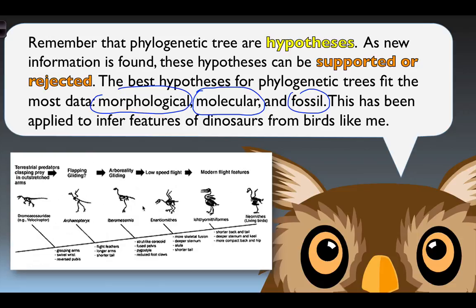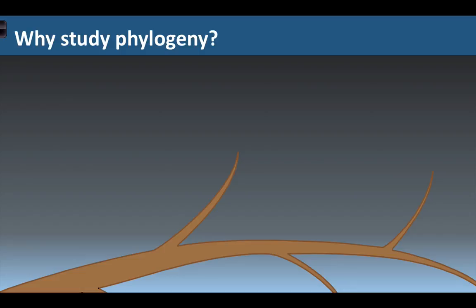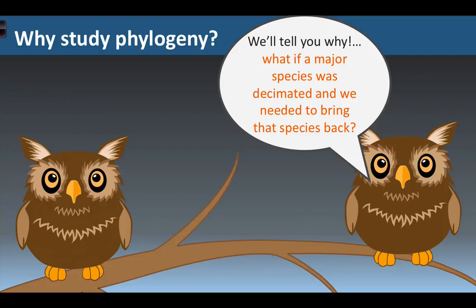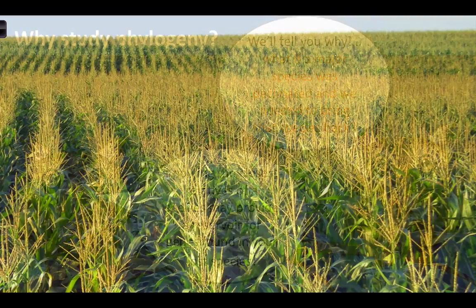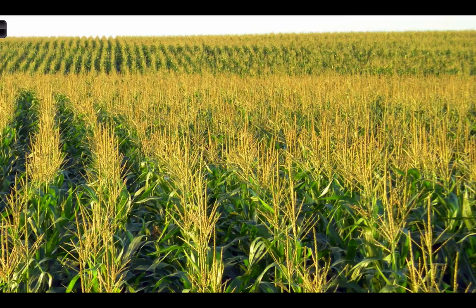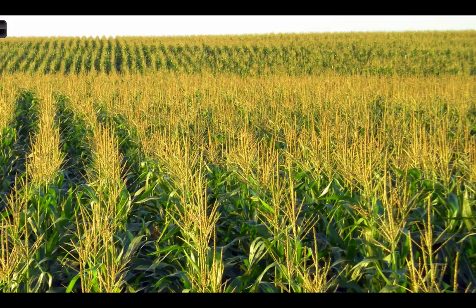What other information can we glean from studying phylogeny? If a species is decimated and we need to bring it back, knowing the closest relative may provide a reservoir for genes found in the lost species. Most countries' agricultural systems consist of monocultures — primarily one or two species dominating crops. If a pathogen unlocks the code for that particular plant, it could wipe them all out. Having a stockpile of the genetics, morphology, and phylogenetics of closely related species could help reconstitute the plant or a close relative to continue producing food.